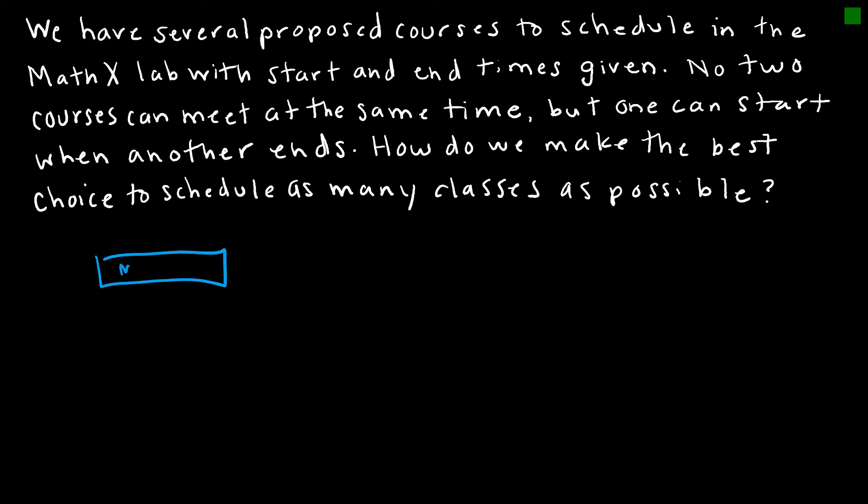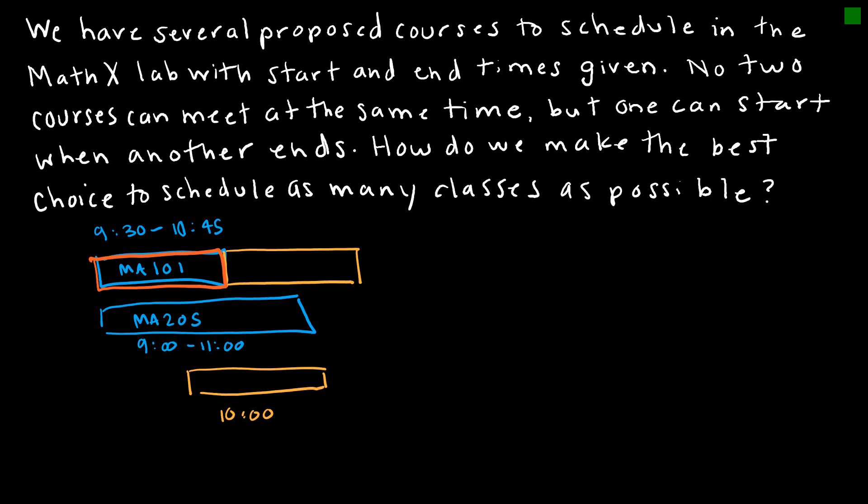So say I'm scheduling Math 101, and that starts at 9:30 a.m. and goes to 10:45. So if that one ends earlier than MA205, which goes from 9 a.m. to 11 a.m., I'm going to choose MA101 because I can start another one right here. So the best possible choice is to always choose the one that can be scheduled that ends the earliest. So if I had one that started at 10, I couldn't choose that one because if I've already chosen MA101 as my first class, then I can't choose this one because it would contradict the fact that no two can meet in the same room at the same time.